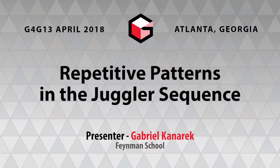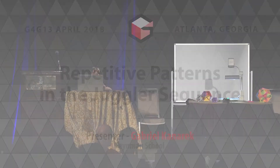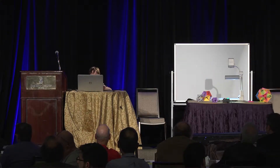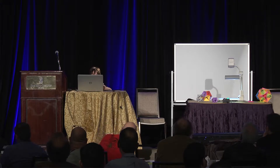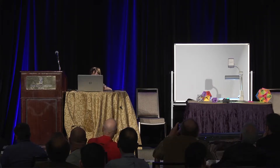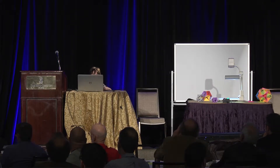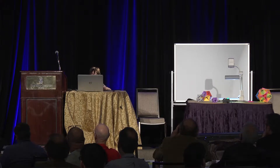Hi, my name is Gabriel Kenrek. I'm eight years old, and I'm a third grader at the Feynman School in Rockville, Maryland. I'm going to talk to you today about repetitive patterns in the juggler sequence.